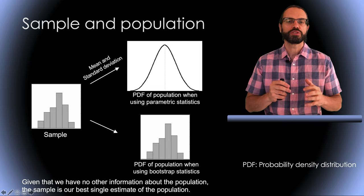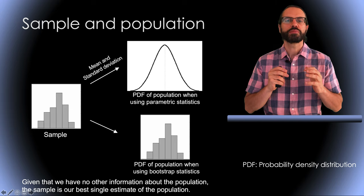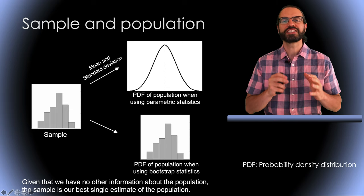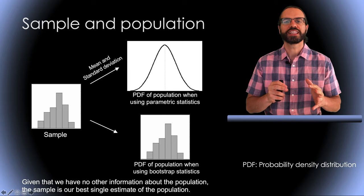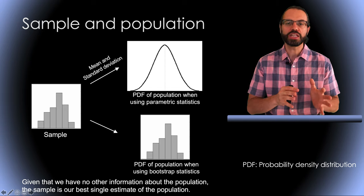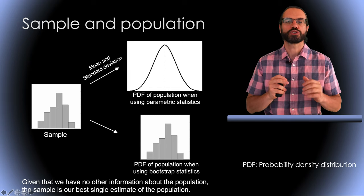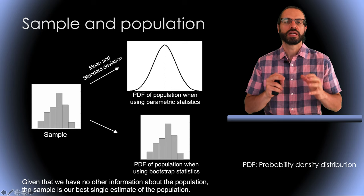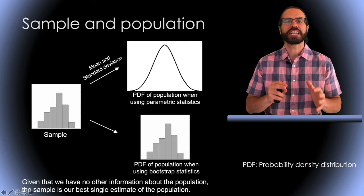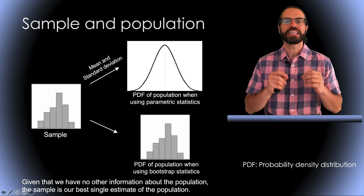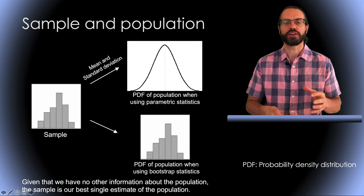When using parametric statistics, we make the assumption that the probability density distribution of the population is Gaussian and can be estimated using the mean and standard deviation of our small sample of subjects. In the bootstrap model, we make the assumption that our best estimate of our population distribution is the distribution of our sample itself.